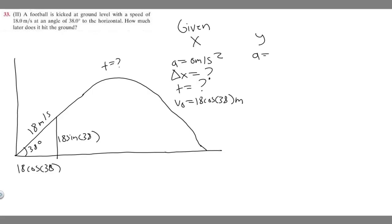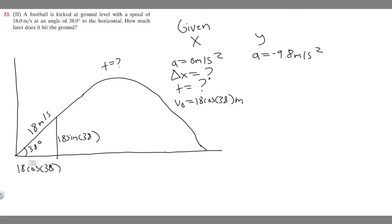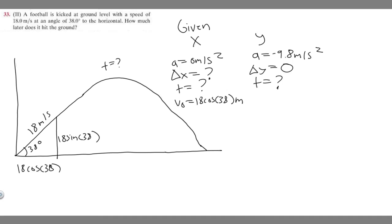For the y direction: acceleration is minus 9.8 meters per second squared due to gravity. Delta y, our change in y — we can set that equal to 0, because the football starts and ends at ground level so it's not really changing overall. Time is what we're solving for. Initial velocity in y is 18 times the sine of 38.